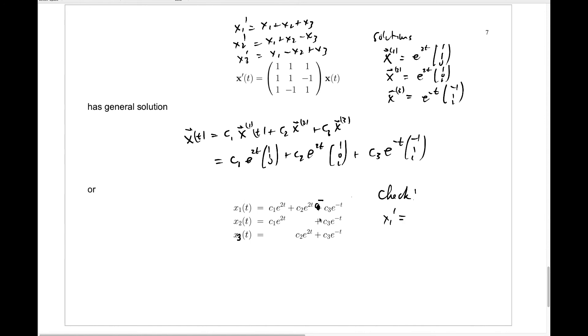Well, what is x1 prime? If I take this and differentiate it, I get 2c1 e to the 2t plus 2c2 e to the 2t plus, now because I bring down a minus 1 times that, minus c3 e to the minus t.